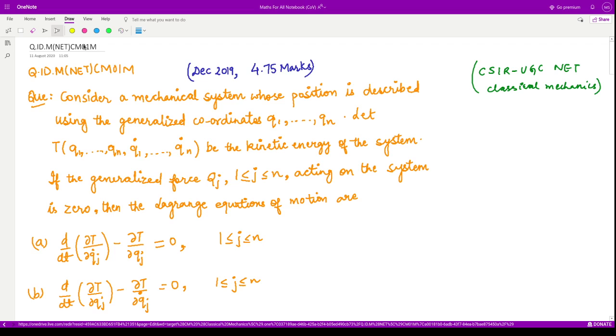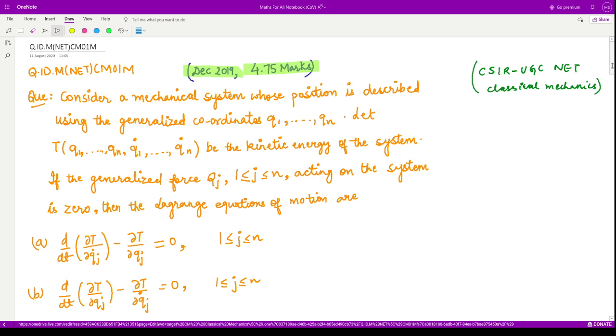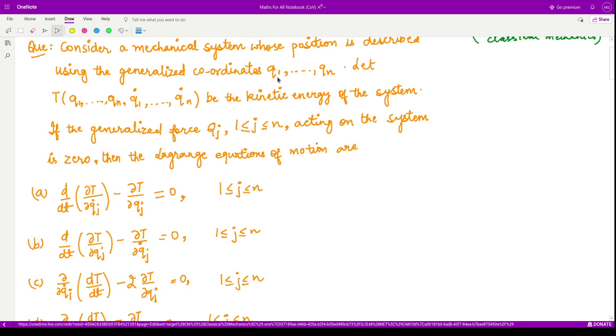This is the very first question, which appeared in December 2019 and consists of 4.75 marks. The question says: consider a mechanical system whose position is described using the generalized coordinates q1 up to qn.